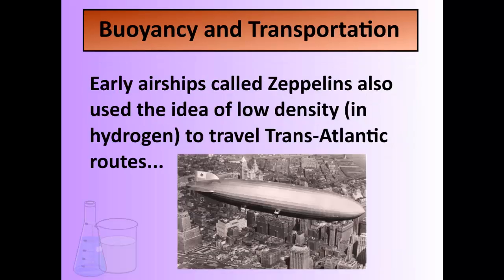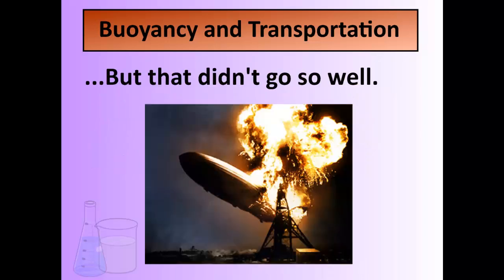Early airships called zeppelins also used the idea of low-density gas — specifically hydrogen — to travel across the Atlantic from Europe to North America. Hydrogen is less dense than air, making it effective for lift. However, the problem with hydrogen was that it's combustible. If you've heard of the Hindenburg disaster, that's what happened. They stopped using those transatlantic zeppelin routes very quickly when they realized the dangers of hydrogen.